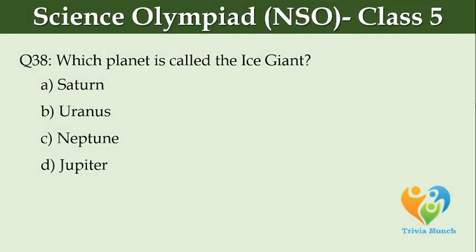Which planet is called the ice giant? Option A, Saturn. Option B, Uranus. Option C, Neptune. Option D, Jupiter.